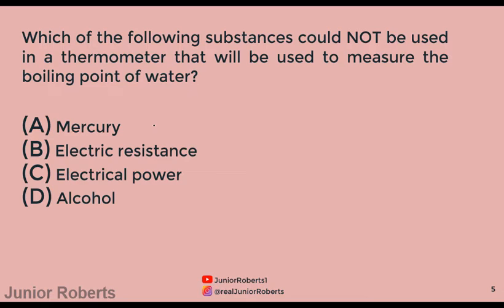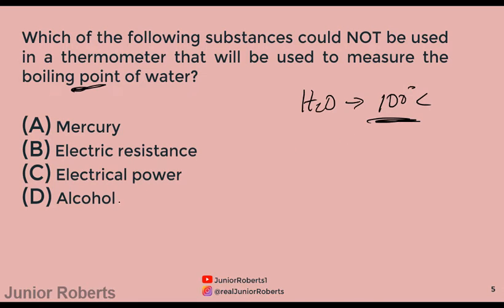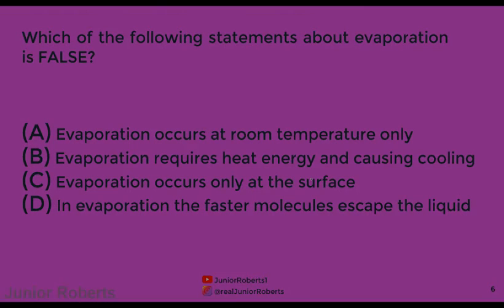This question asks which substance could not be used in a thermometer to measure the boiling point of water. Pure water boils at 100°C, so the substance used must sustain that temperature. Looking at option D — alcohol — alcohol boils at about 78°C, which is less than the boiling point of water, so alcohol cannot be used. The answer is D.